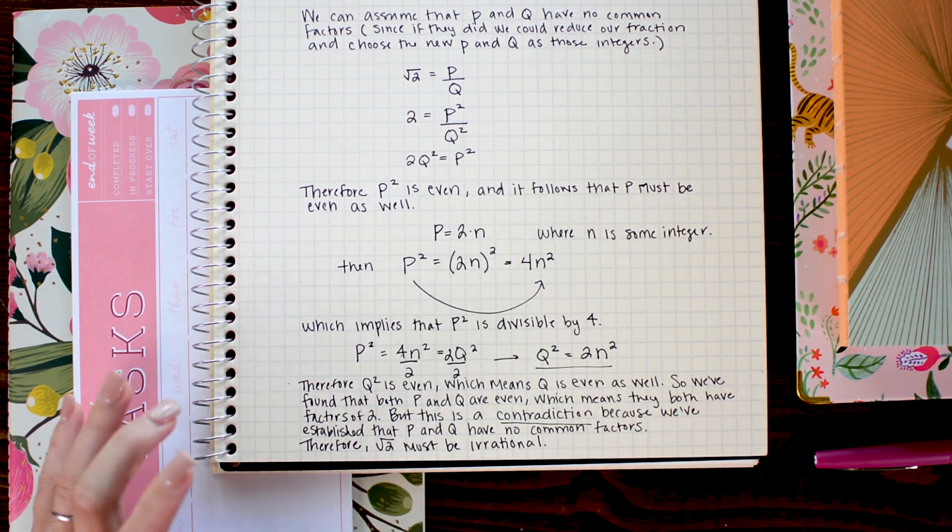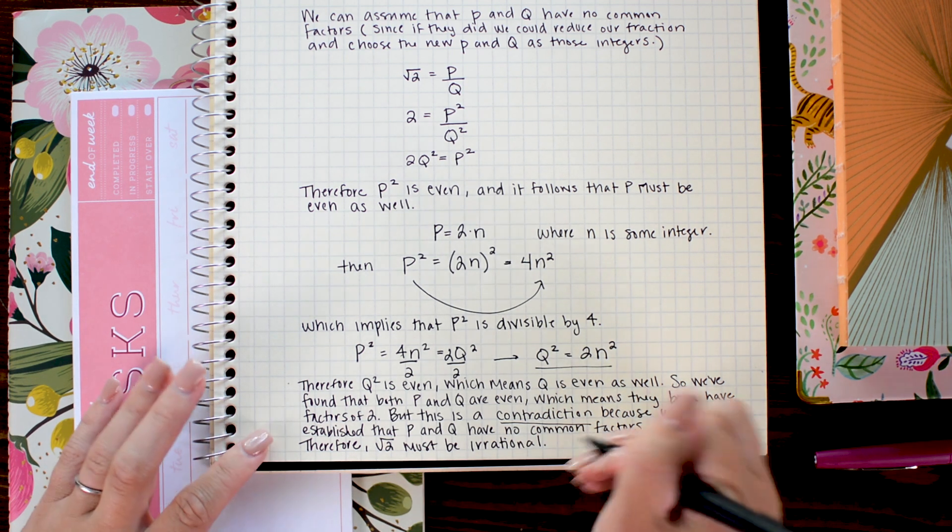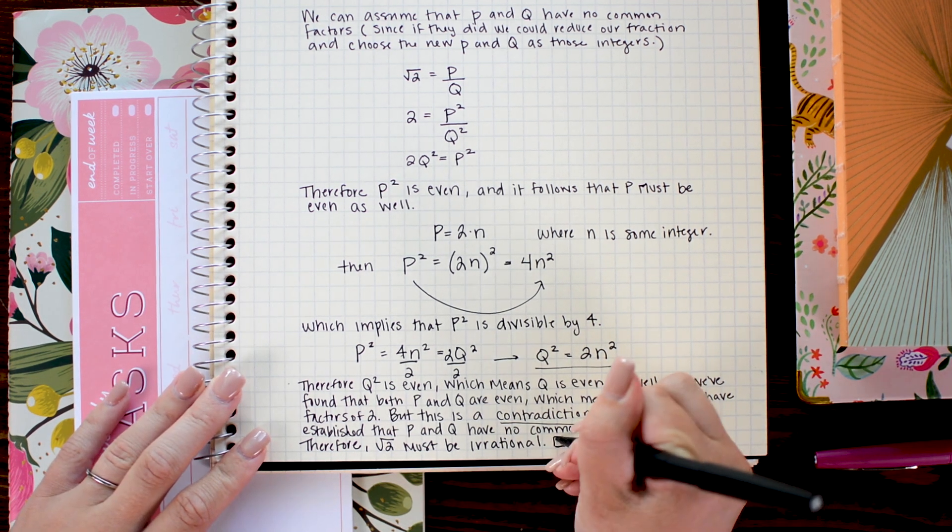And of course, to signify that our proof is over, we can write QED or do a little black box.